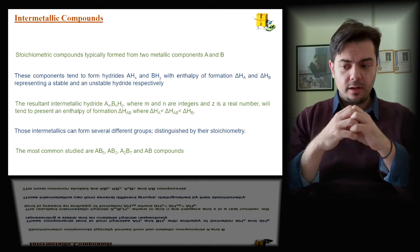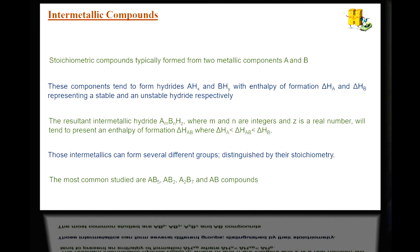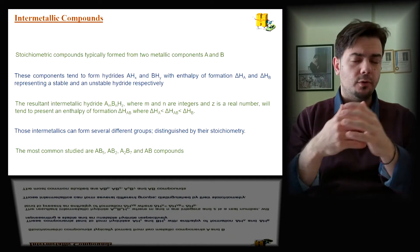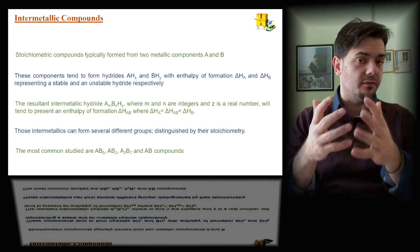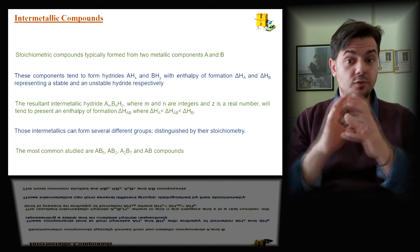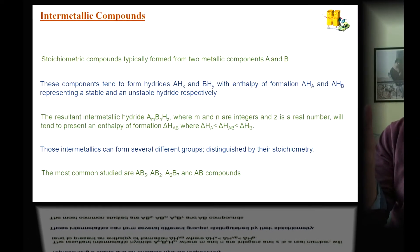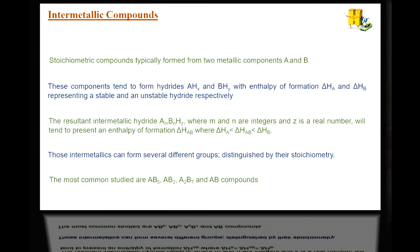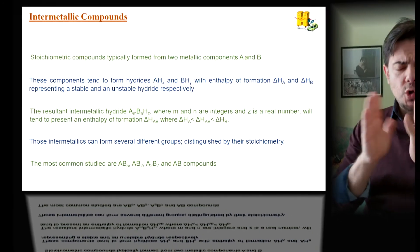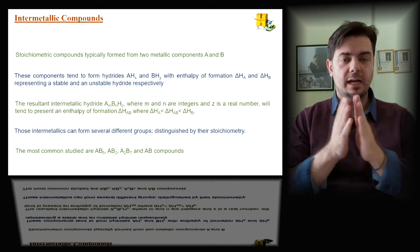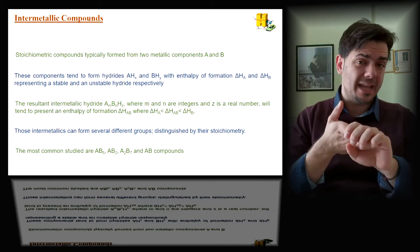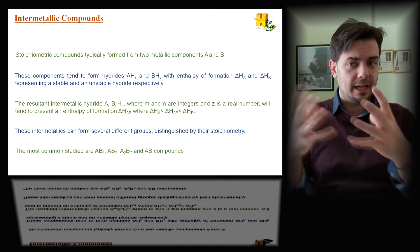When they come together, the resulting hydride has a stoichiometry of A with index M, B with index N, and H with index Z, where M and N are integers and Z is a real number. So it might be A1.5B0.8H5.3, whatever it is. The enthalpy of formation for the whole intermetallic is somewhere between the enthalpy of formation for the stable and the non-stable hydride. Those intermetallics can form several groups, and the properties, the thermodynamics, are purely affected by the stoichiometry. The most common studied intermetallics are the AB5, the AB2, the AB, and the A2B7 sometimes.